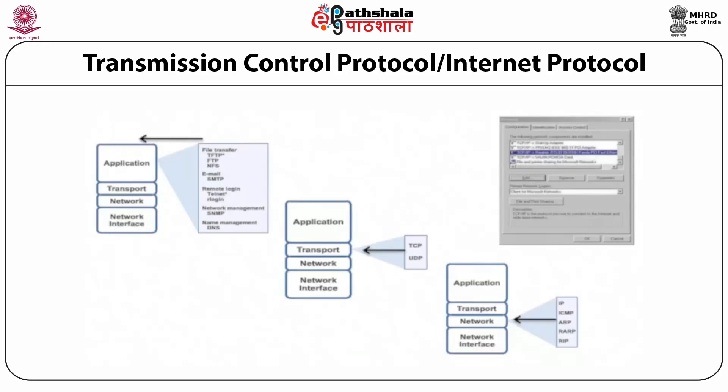In TCP/IP, the application layer handles SNMP, DNS, and other application protocols similar to OSI. The transport layer has two major protocols: TCP and UDP. UDP deals with datagram packets. These are the protocols at the transport layer of the TCP/IP model.